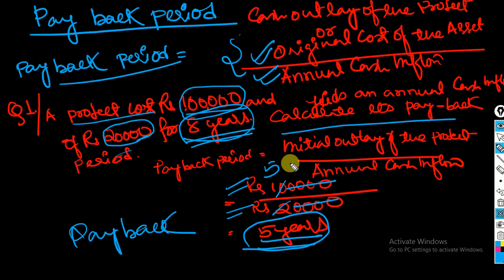So here the initial cost of the project is one lakh to get the payback period, and the cash flow is twenty thousand. So if we divide, it's twenty thousand by, we could divide the one lakh by twenty thousand to get the payback period.